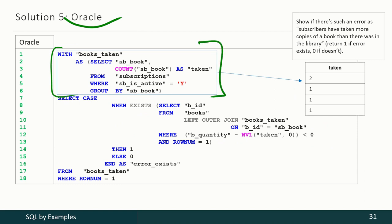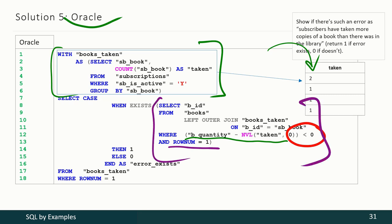With Oracle the approach is the same: calculate how many copies of each book were taken by subscribers, calculate how many copies are left in the library, select negative values only, leave one record only, then pass that information into the EXISTS function and transform its result into 1 or 0. Oracle follows Microsoft SQL Server's behavior and does not perform automatic conversion of this result into 1 or 0.